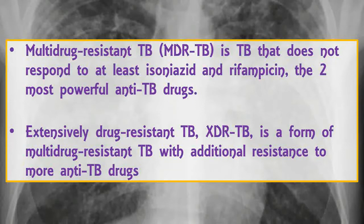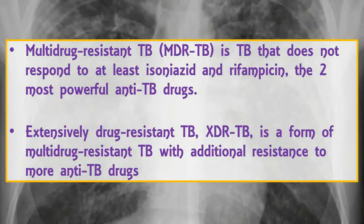The term drug-resistant TB refers to cases of TB caused by an isolate of Mycobacterium tuberculosis that is resistant to one of the first-line anti-TB drugs: isoniazid, rifampin, pyrazinamide, ethambutol, or streptomycin. Multi-drug resistant TB (MDR-TB) is TB that does not respond to at least isoniazid and rifampicin, the two most powerful anti-TB drugs.